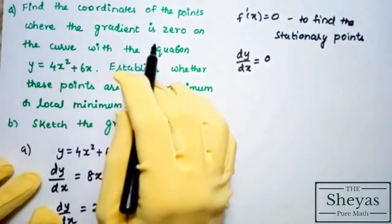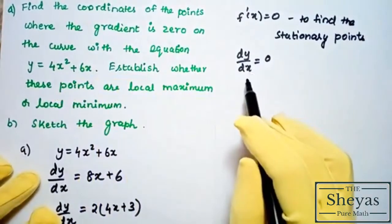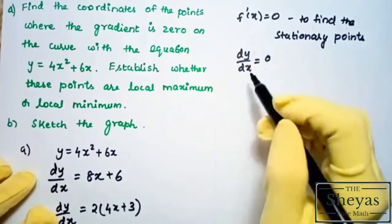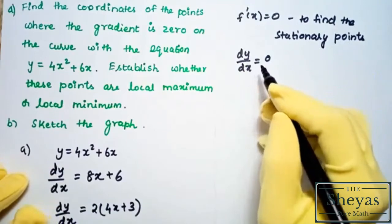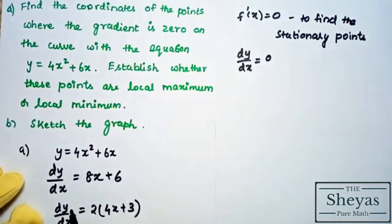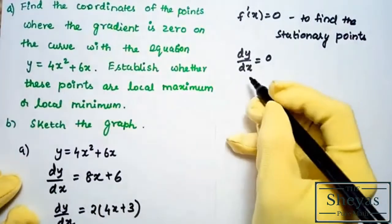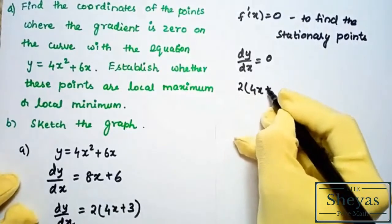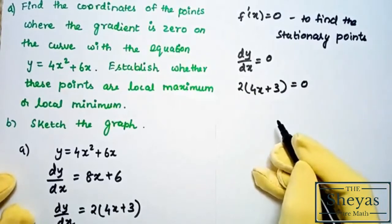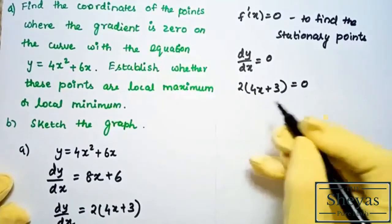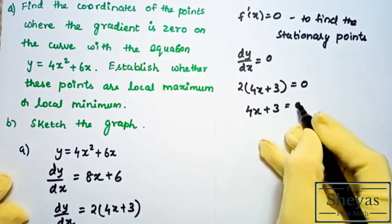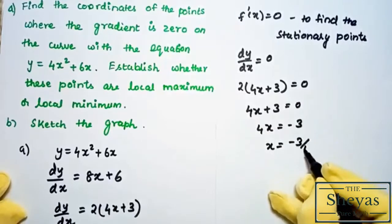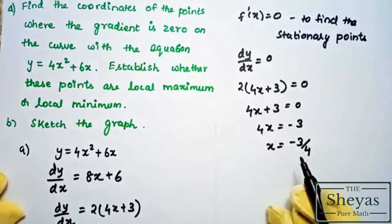The gradient is 0, so we set dy/dx = 0 to find the stationary points. Therefore 2(4x + 3) = 0. Since 2 ≠ 0, we have 4x + 3 = 0, giving 4x = −3, so x = −3/4. We have found the stationary x-value: x = −3/4.